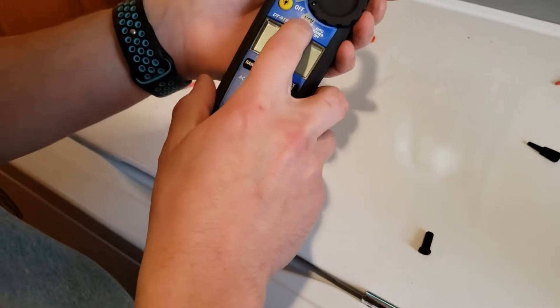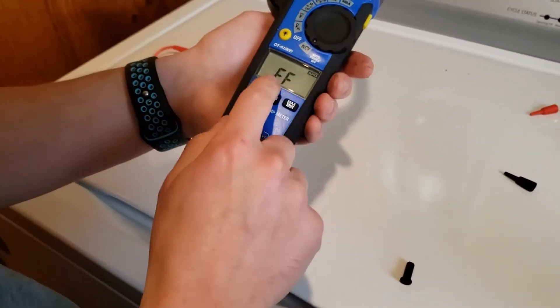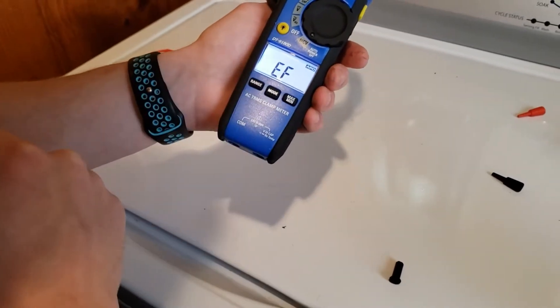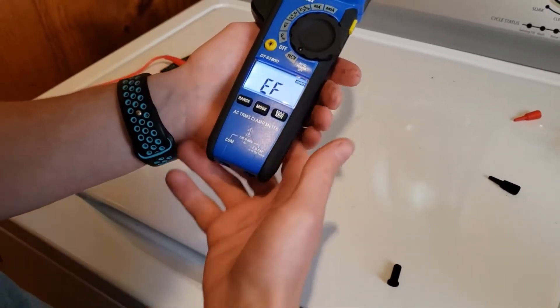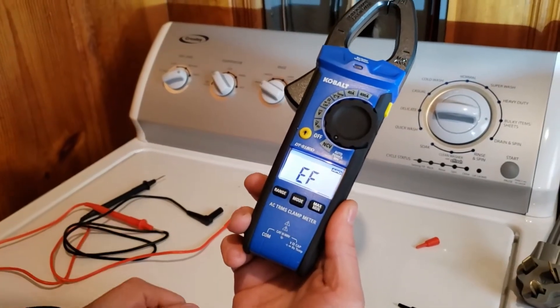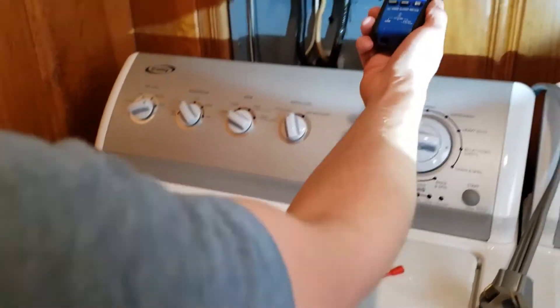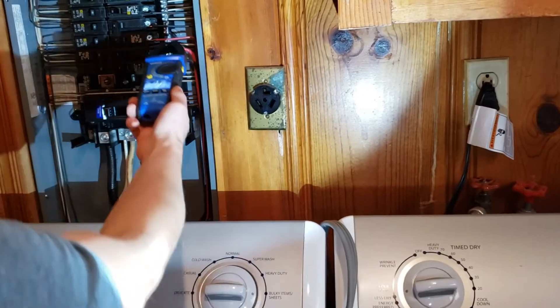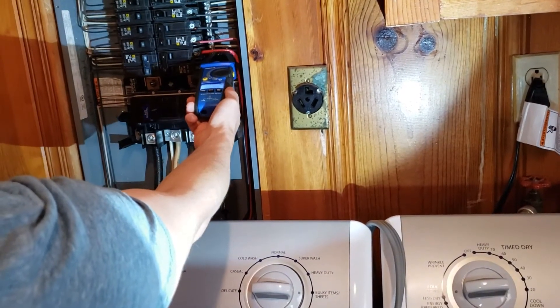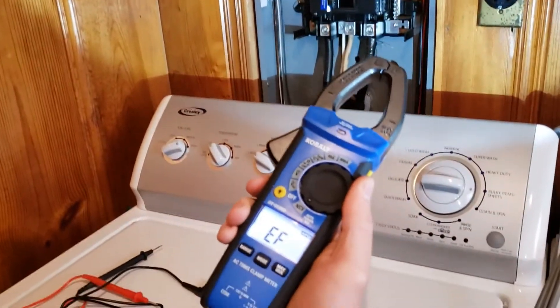Starting off we have the non-contact voltage detector. If you flip it over, you're going to get a reading of EF, which stands for electromagnetic force. If I hold this up close to something that has voltage going through it, you can see it's got static electricity too, it will sense that there's voltage and you hear the beep. So that one's really easy to use.